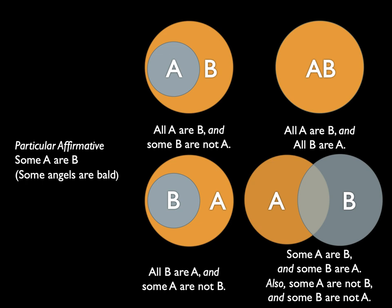The particular affirmative has two additional circle diagrams. The bottom-left shows that while all bald things are angels, not all angels are bald. Lastly, the bottom-right is a Venn diagram showing there are some angels that are not bald, some bald things that are not angels, and the overlapping portion represents the bald angels — where the circles overlap represents the angels who are bald and the bald things who are angels.